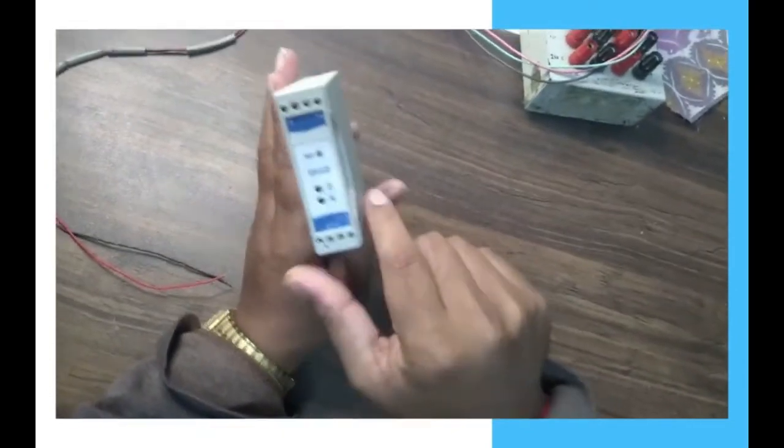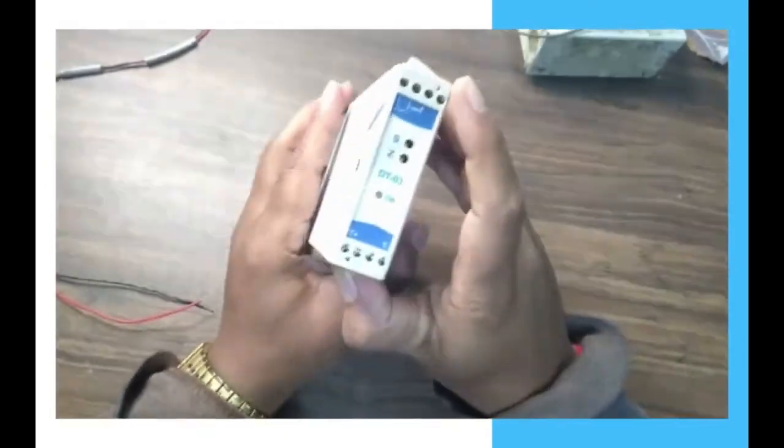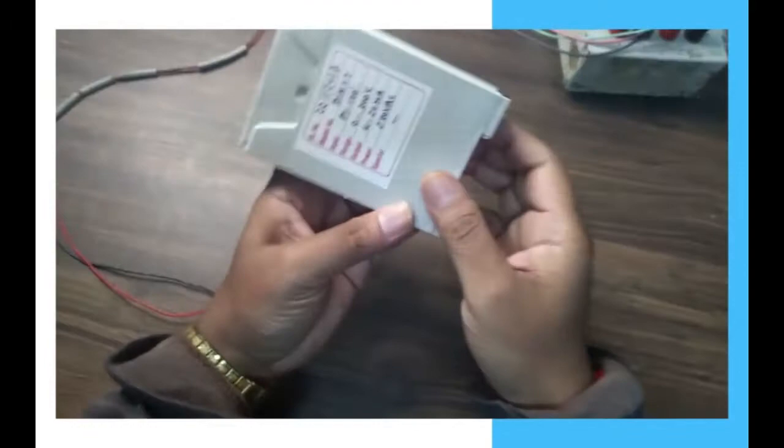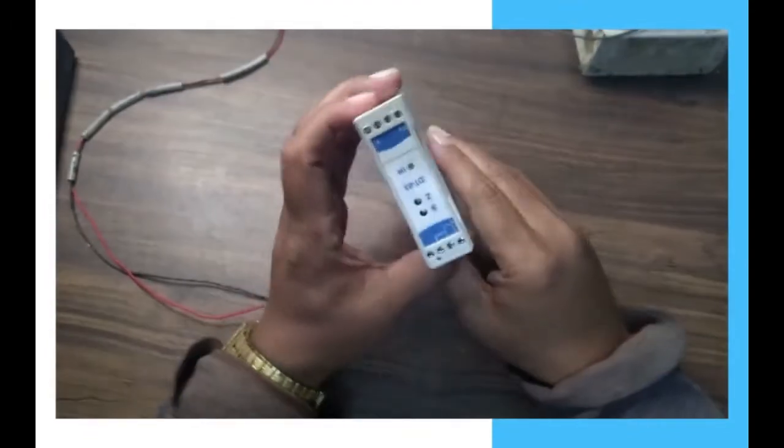This is a 360-degree view of the thin rail mount temperature transmitter. Now we will see the working setup.